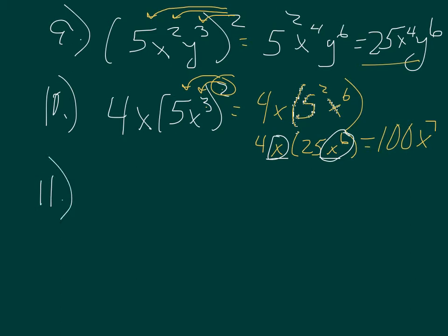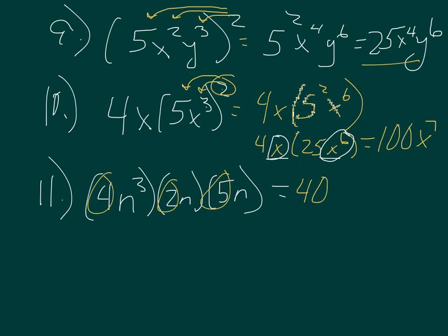Eleven. Getting more technical. 4n to the third times 2n times 5n. There are no powers to powers, so I'm basically adding the exponents all the way across. But I still have to multiply my numbers. So I have 4 times 2 is 8 times 5 is 40. 3n here, 1n here, 1n here gives me 5n's in all. 40n to the fifth.